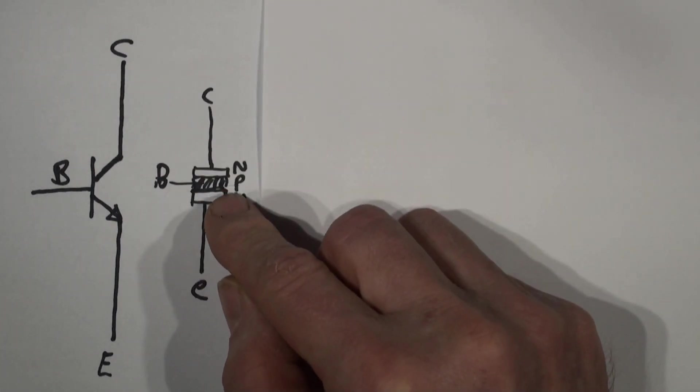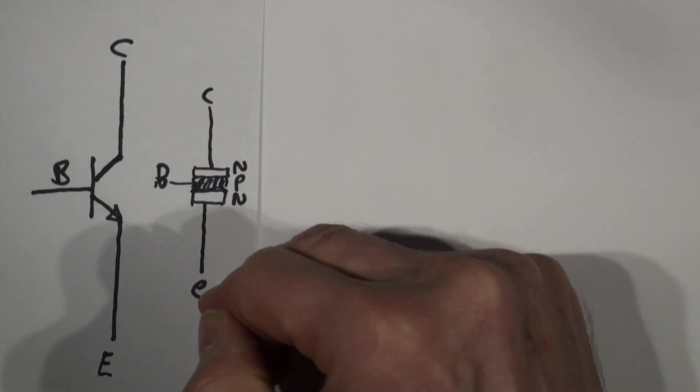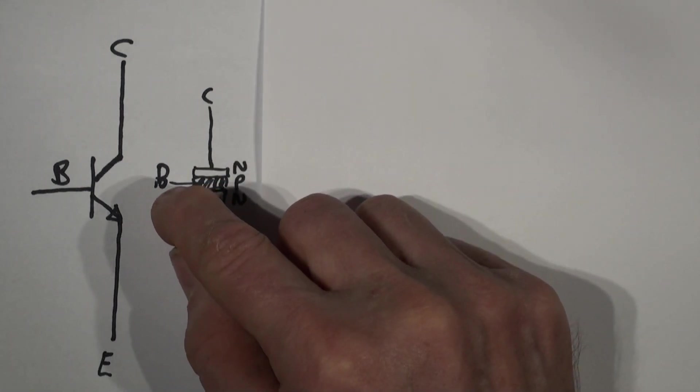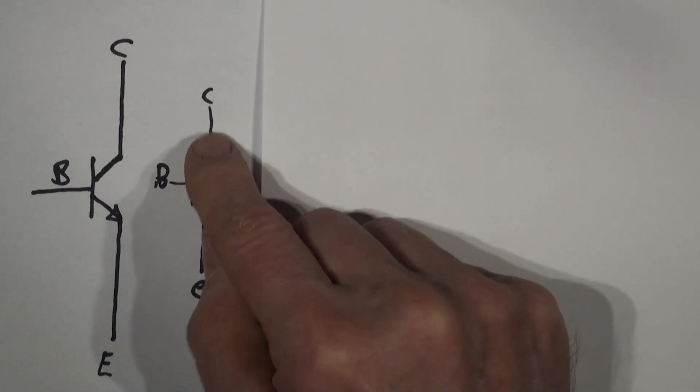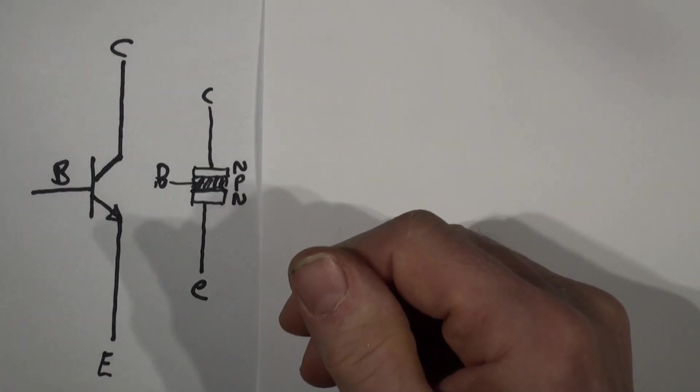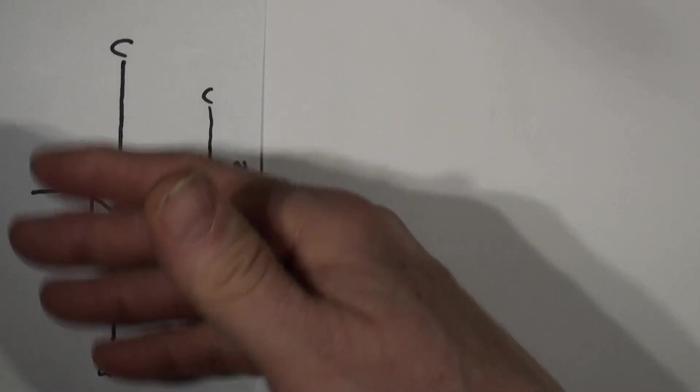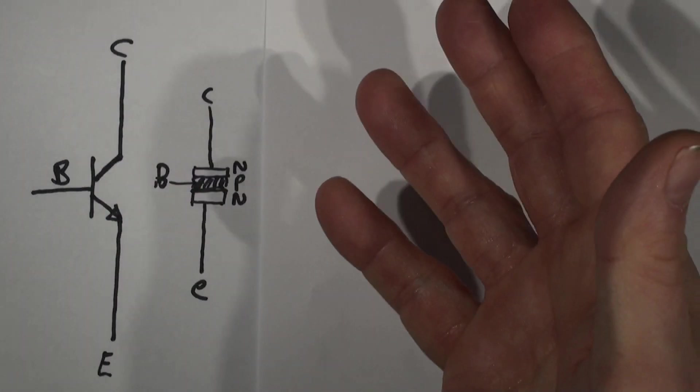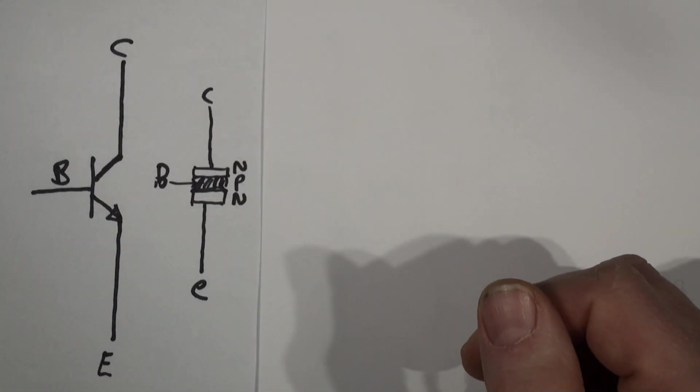Of course everyone knows that on an NPN transistor the collector would be positive, the emitter would be negative usually in the circuit, biased. And then by passing a small current down the base, you can actually have a multiple of that current coming down through the collector emitter path. It's a current multiplier basically, that's what the HFE or the current gain.